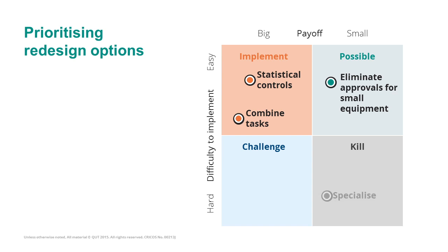The fourth redesign option was to specialise the process by having one variant for small equipment and one for large equipment. Since small equipment is less important, this allows more efficiency for certain cases, but it is difficult to implement because we essentially have to redesign two processes with separate guidelines. Therefore it falls in the kill quadrant — relatively small payoff and hard to implement.